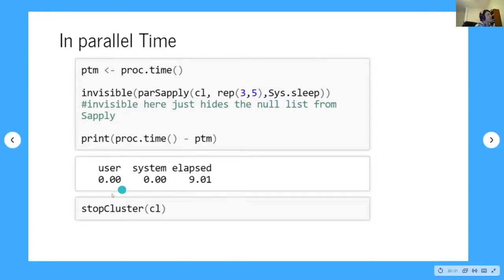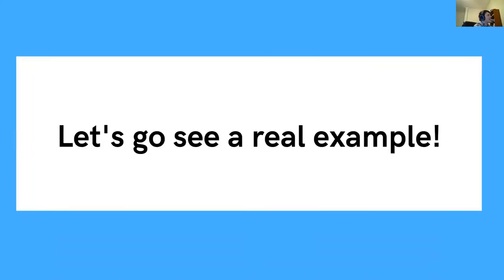Once I'm done with this toy example, I stop the cluster with stopCluster. Now let's look at a real example. I showed a toy example with a for loop and system.sleep, but now let me open up R Studio and show you something practical.